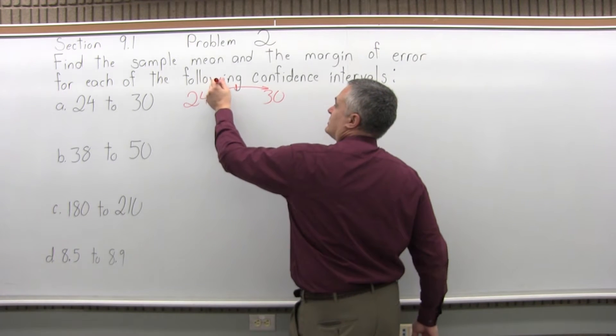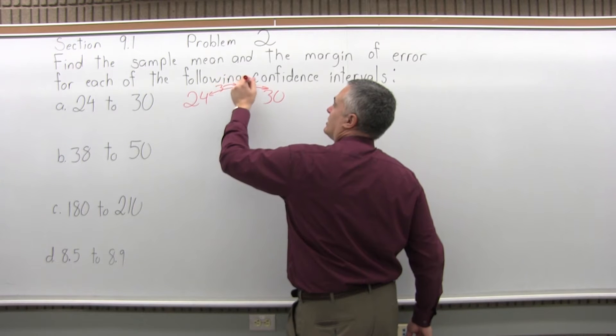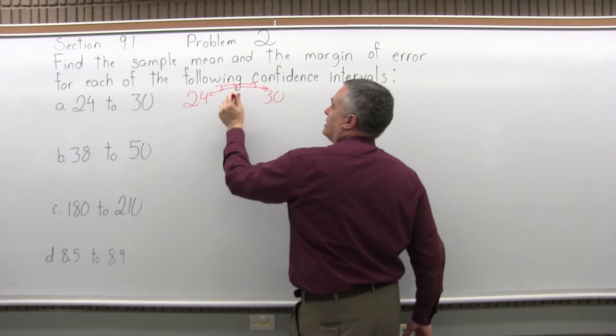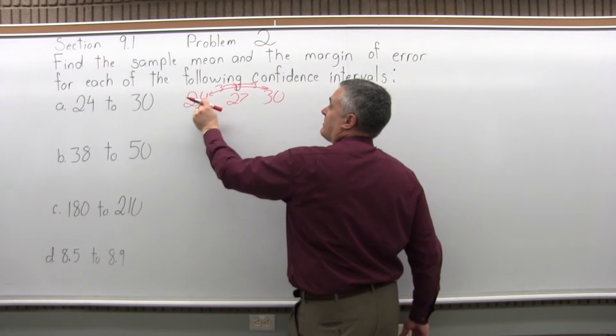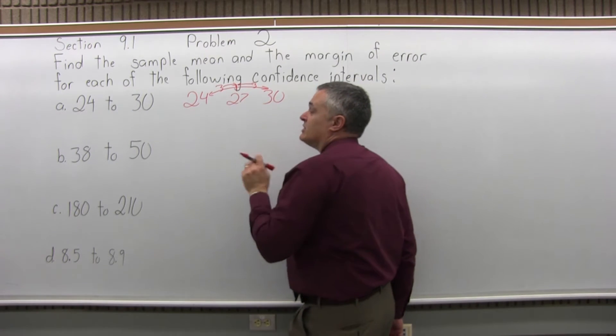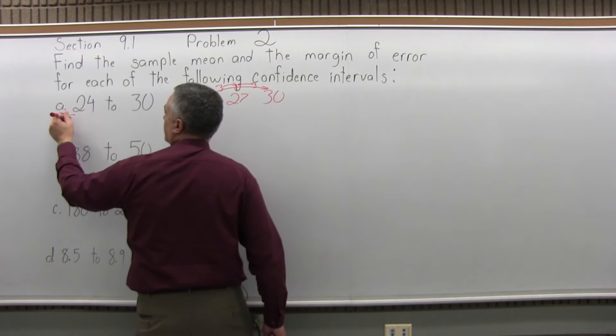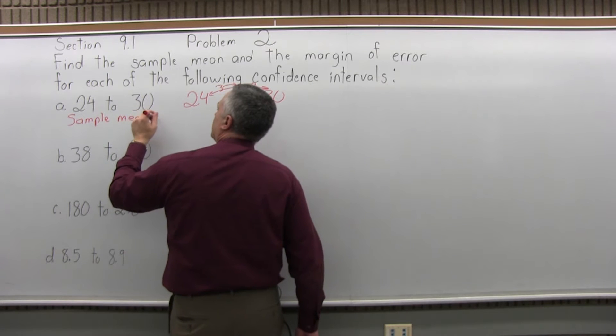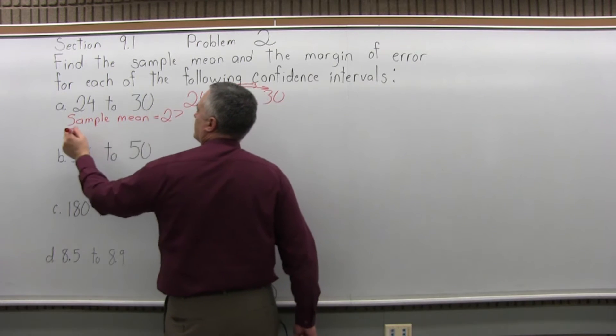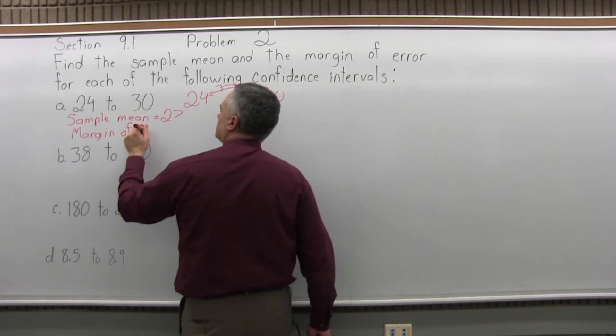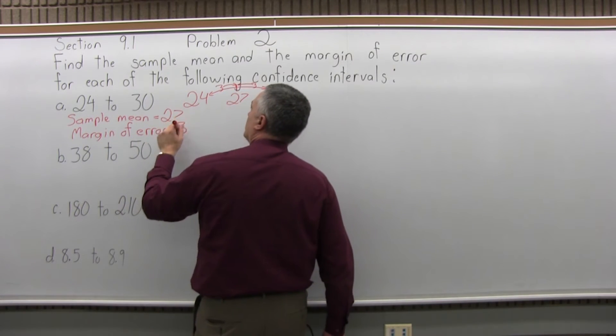So 6 you would split half and half. It takes 3 to go to that midway point from the small end and from the big end. So that would be 27 is the middle. So 27 minus 3 gives you your 24, 27 plus 3 gives you your 30. So for part A the sample mean equals 27 and the margin of error would be 3.